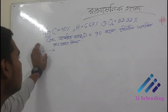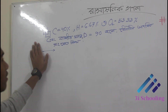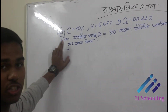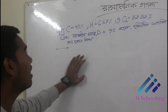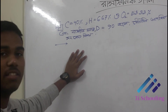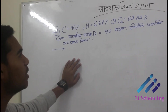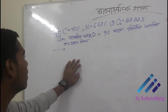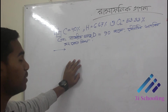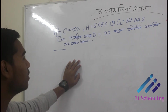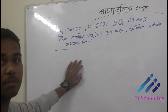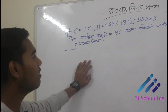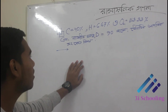I have a question about the carbon, which is 44% of carbon; hydrogen is 6.67%; and oxygen is 50% or 53%. The density of carbon is 90% of the carbon, carbon, hydrogen.